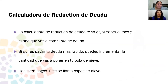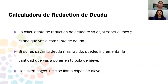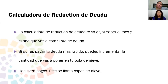La calculadora de reducción de deuda te va a dejar saber el mes y el año que vas a estar libre de deuda. Si quieres pagar tu deuda más rápido, puedes incrementar la cantidad que vas a poner en tu bola de nieve. Haz extra pagos — esto se llama copos de nieve. Una manera de hacer extra pagos: si tu pago es cada 15, el otro 15 puedes pagar otro pago. Si tienes un segundo trabajo o recibiste el estímulo o un regalo de cumpleaños, lo puedes usar como un copo de nieve y pagarlo a tu deuda.